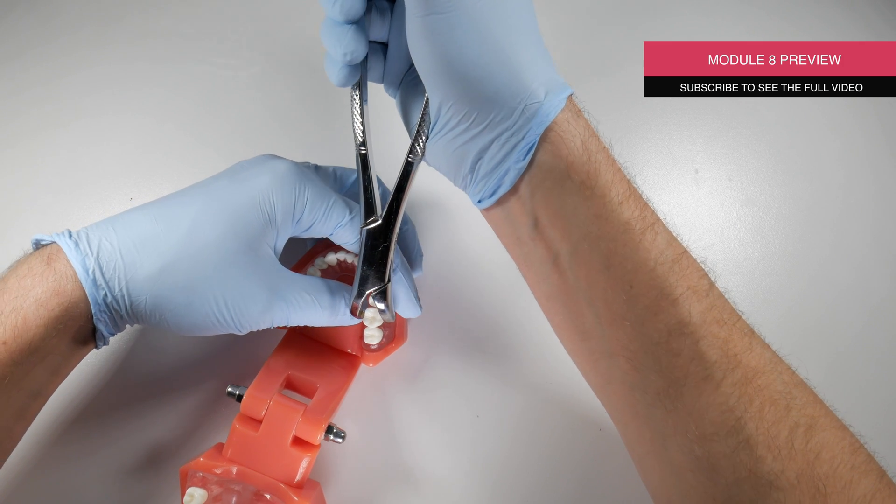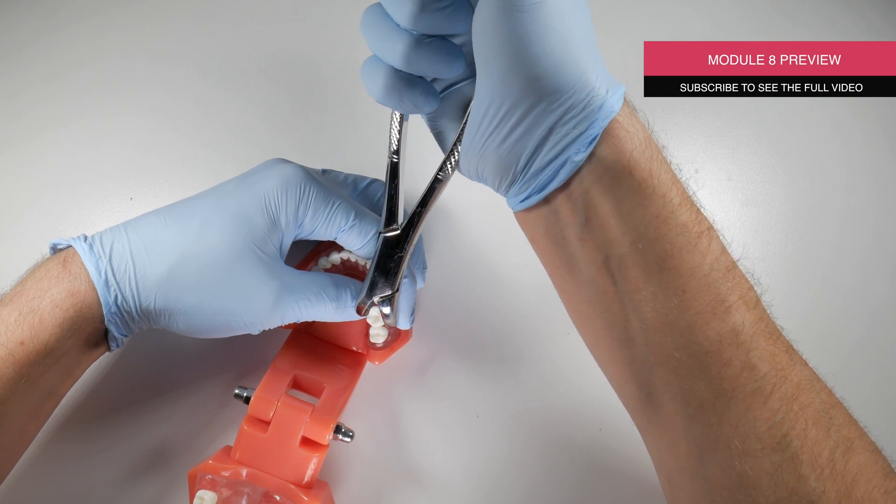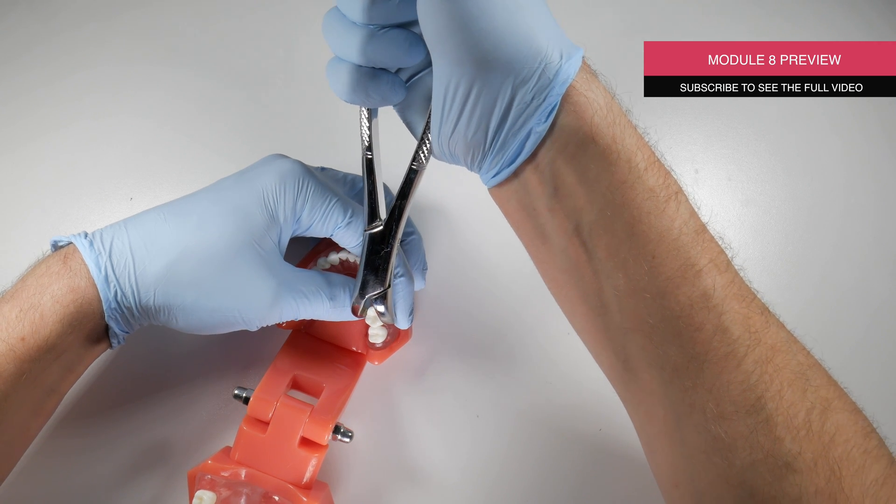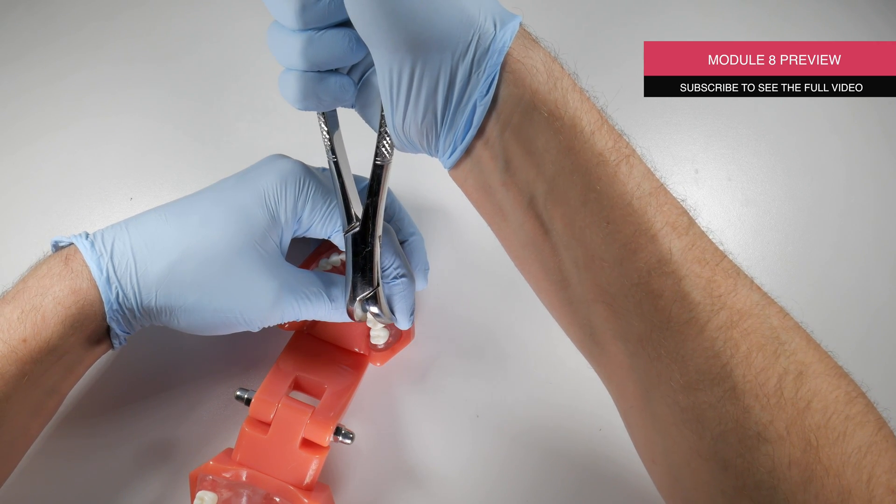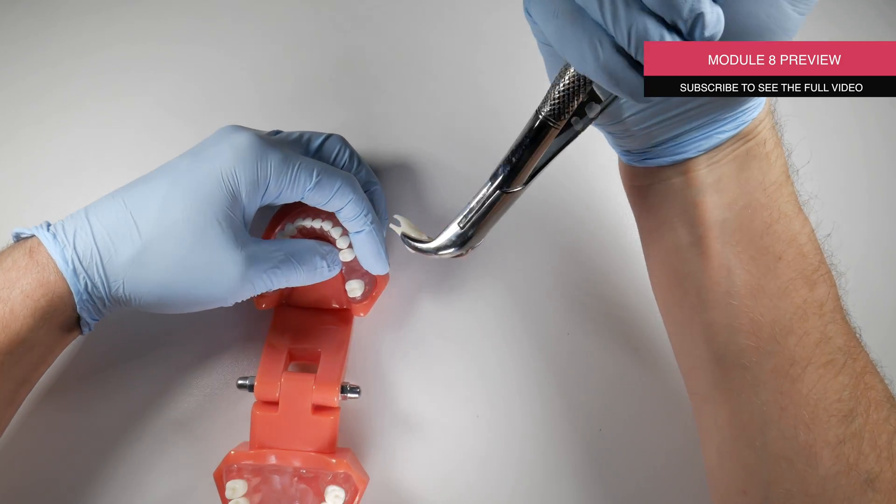When the tooth starts lifting or moving, what you're going to do is you're going to then apply some buccal rotation and hold it for about 10 seconds. A little bit of lingual rotation, hold it for 10 seconds. And then you can kind of do this figure of eight movement and that tooth is going to lift right out.